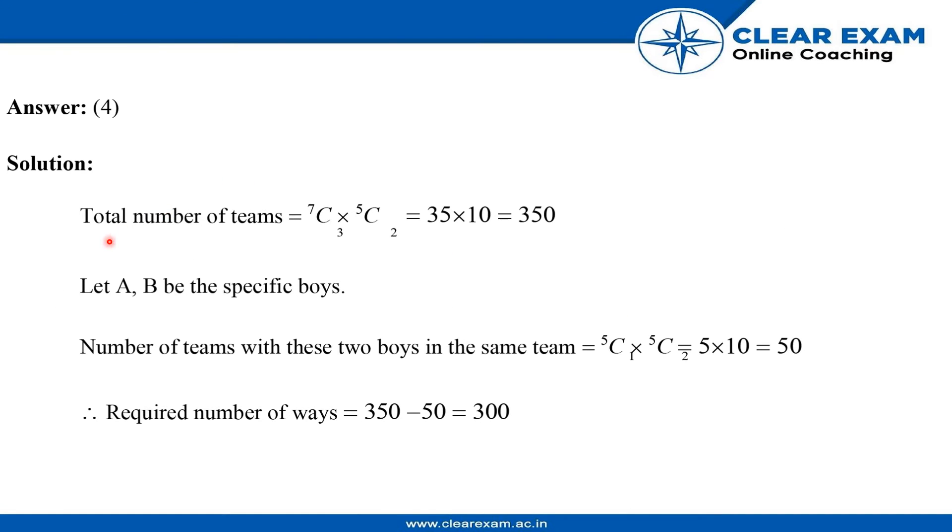The solution is: total number of teams is 7C3 into 5C2, which is 35 into 10, which is 350. Let A, B be the specific boys.